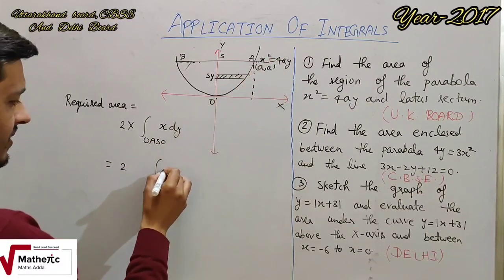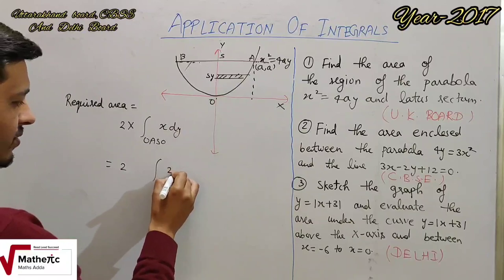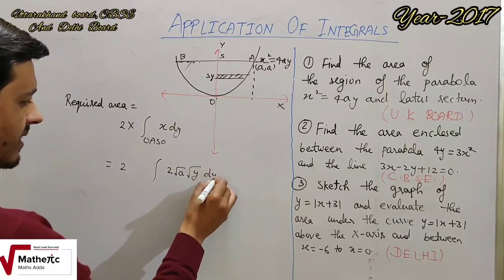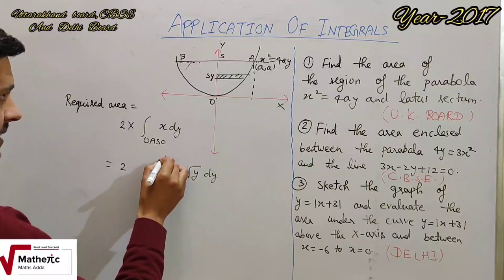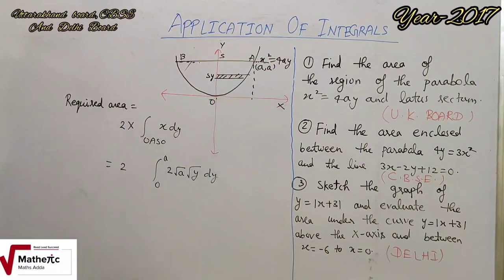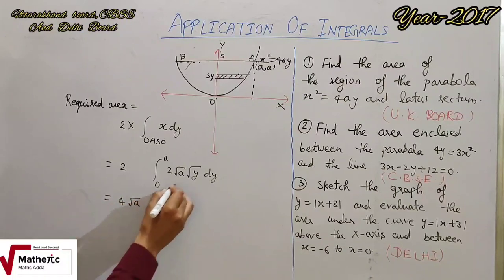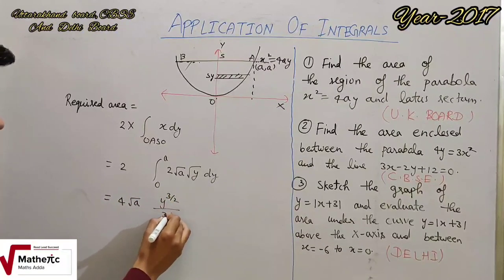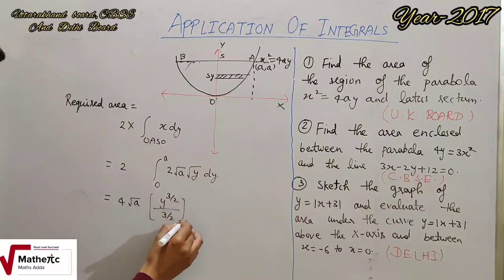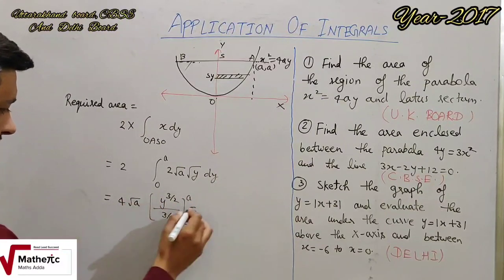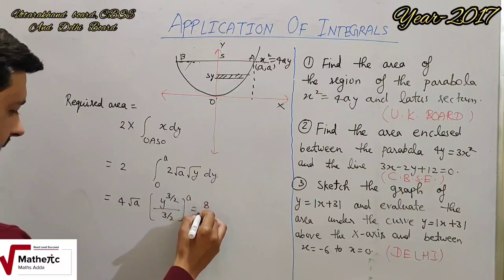x की value निकालेंगे तो 2√a · √y dy और limit 0 से a तक जाएगी। 4√a · y^(1/2) का y^(3/2) upon 3/2, limit 0 से a। तो यह 2 ऊपर आकर 8/3 हो जाएगा।